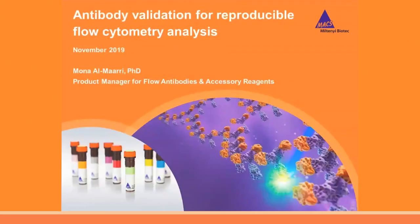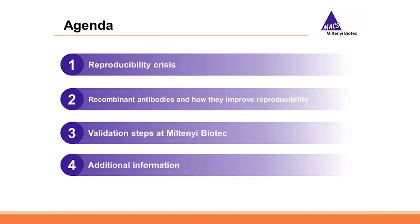Welcome everyone, and thank you for joining this webinar on reproducibility and antibody validation. I will give you an overview about the reproducibility crisis — what it means and how it evolved. Then I will explain what recombinant antibodies are and how they can help to improve reproducibility, taking our recombinant Reaffinity antibodies as an example. I will continue with the validation steps we perform at Miltenyi Biotech, and at the end give some additional relevant information.